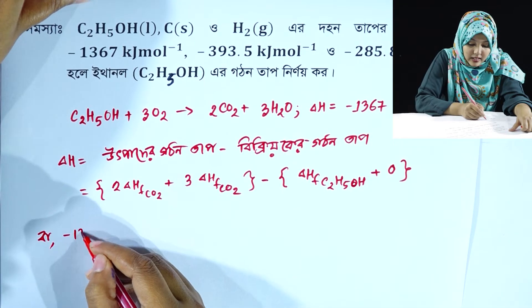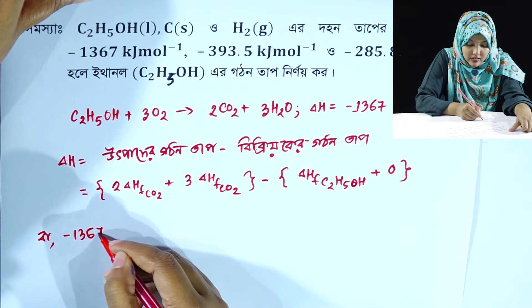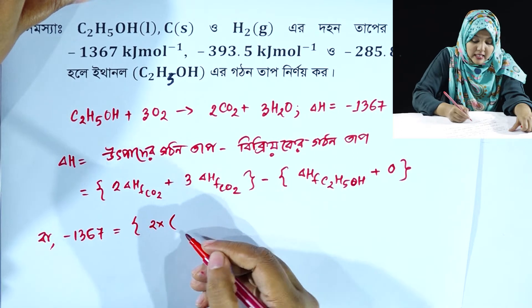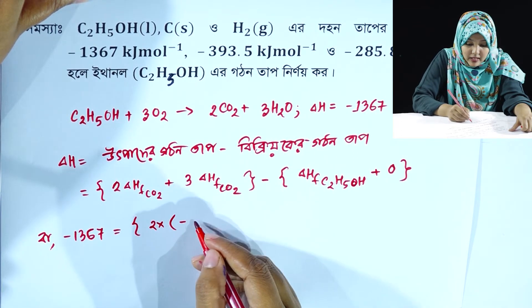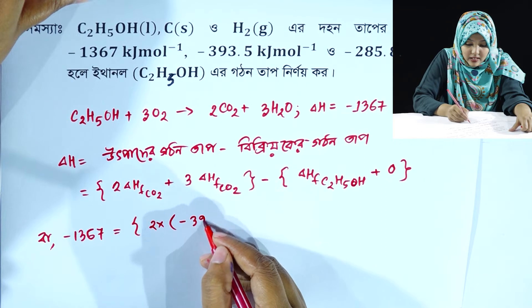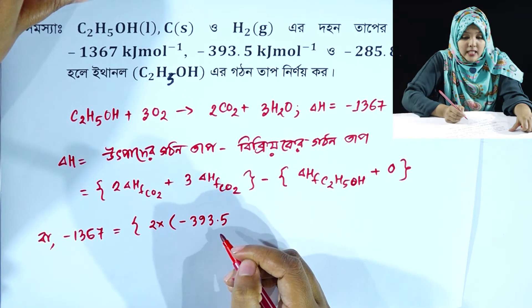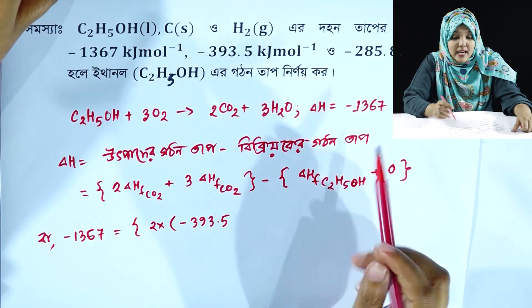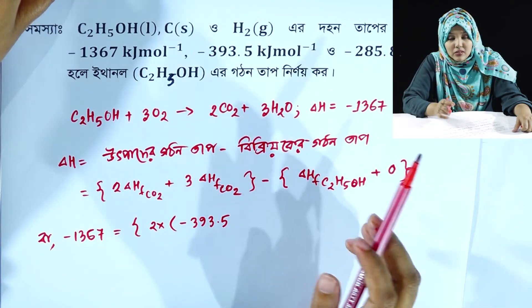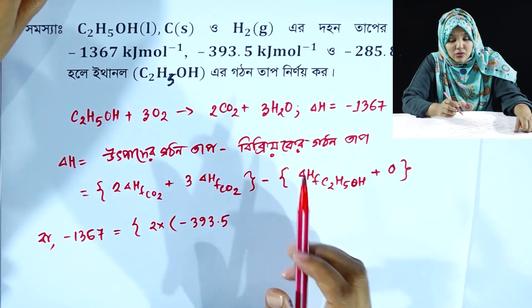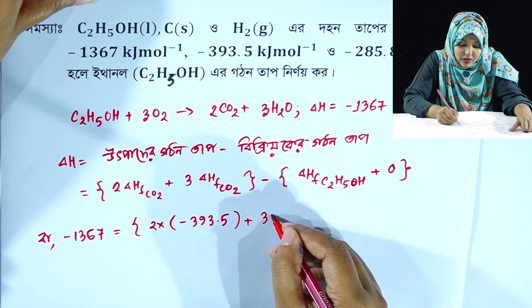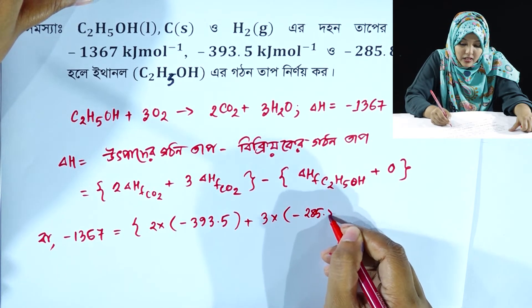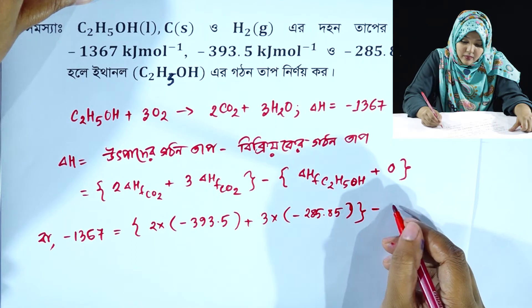ΔH₁ minus 1367 is equal to 2 into carbon dioxide equals minus 393.5, plus 3 into minus 285.85.